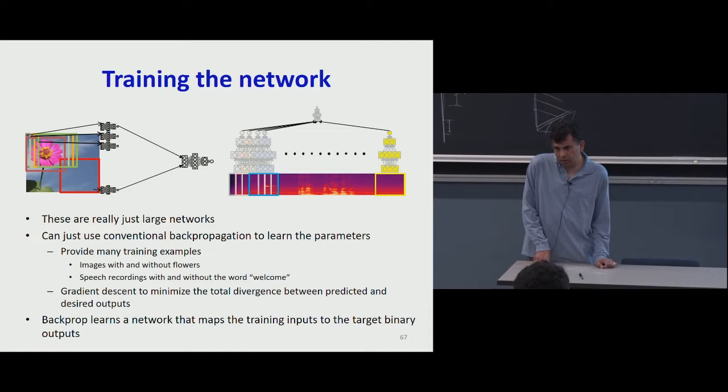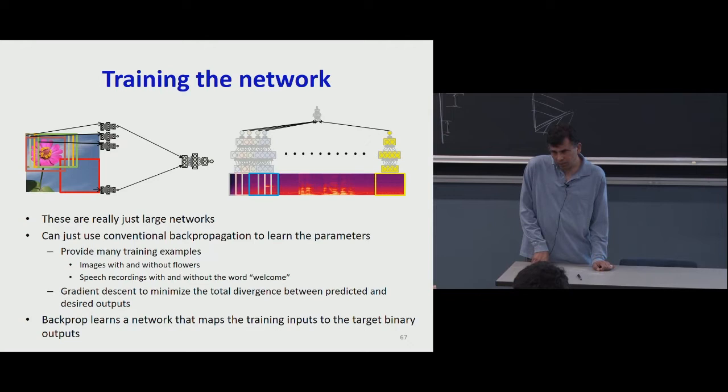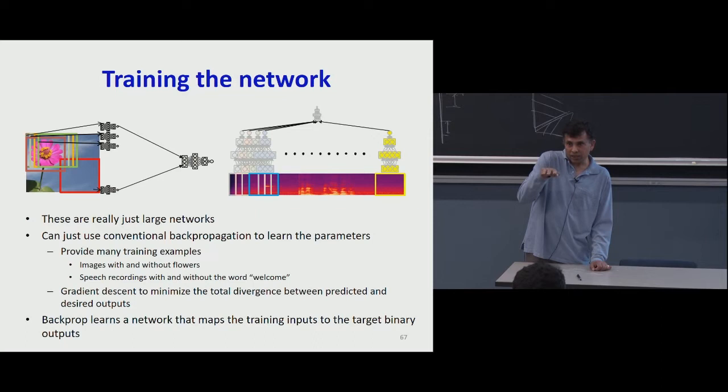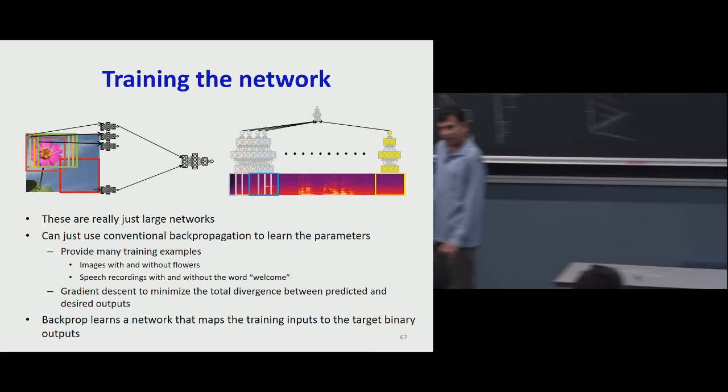A student asks about using softmax in the scanning context — softmax gives relative activation, showing how much a particular window is activated relative to others. A better idea is to think of it as a perceptron looking at weighted combinations: if the weighted combination exceeds a threshold, it fires; otherwise it doesn't. The key is that weighted combinations tell you if at least three consecutive locations all have high match scores.